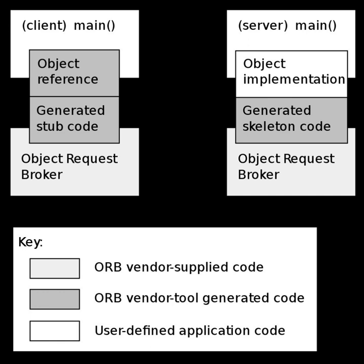CORBA's benefits include language and OS independence, freedom from technology-linked implementations, strong data typing, high level of tunability, and freedom from the details of distributed data transfers. CORBA was designed to free engineers from limitations of coupling their designs to a particular software language. Currently there are many languages supported by various CORBA providers, the most popular being Java and C++. There are also C++11, C-only, Smalltalk, Perl, Ada, Ruby, and Python implementations, just to mention a few.